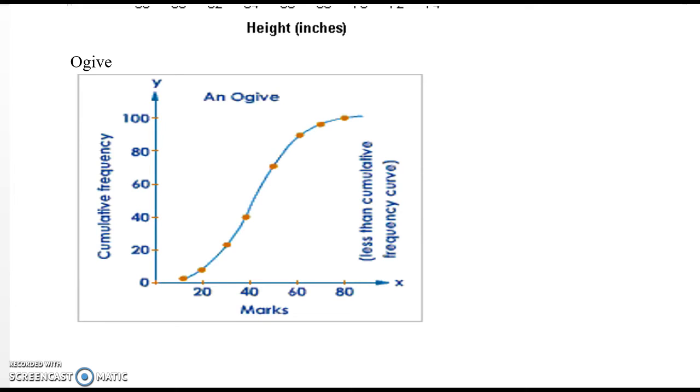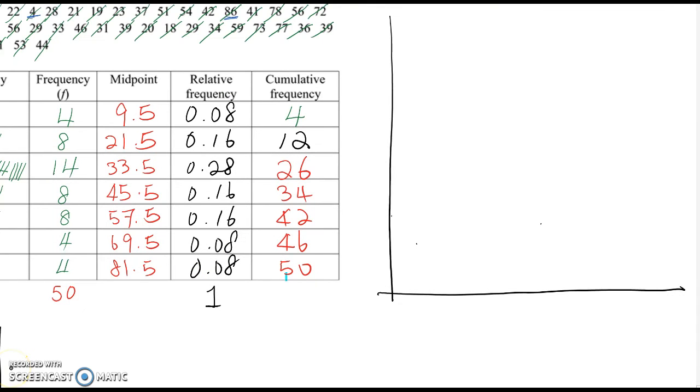Therefore, we want to construct ogive chart from our previous example. For constructing ogive chart, we're using midpoint and cumulative frequency value. So horizontal scale will be midpoint.